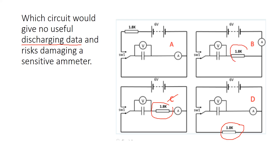Circuit B can be crossed off because it discharges through a resistor in series with the capacitor. Looking at circuit A: if you follow the circuit around the discharging loop, there is no resistor, and so the ammeter is not protected — you could end up damaging it. So A is the correct answer. Hopefully that's been helpful for understanding which circuits to use when thinking about capacitance and resistors.